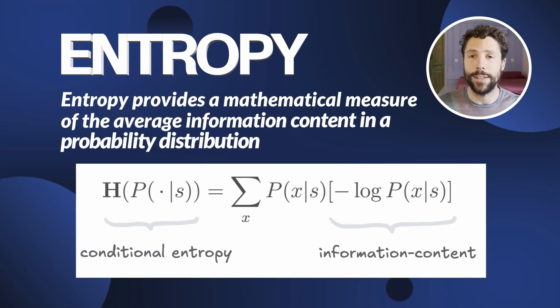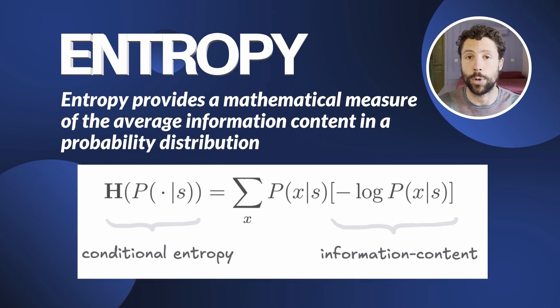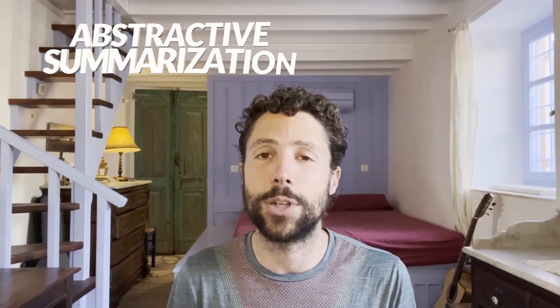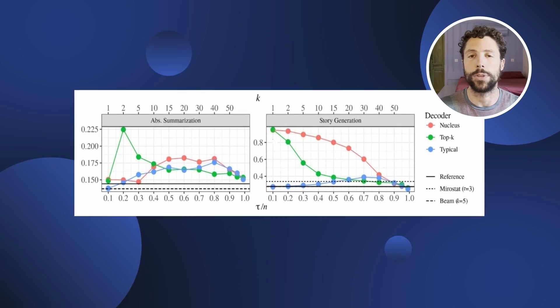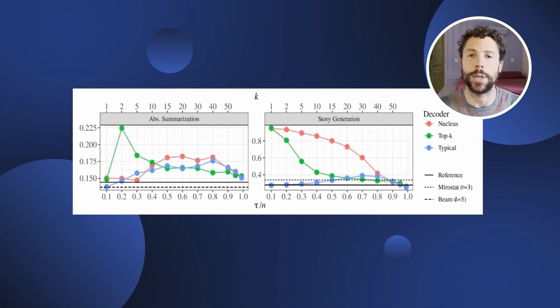In information theory, entropy provides a mathematical measure of the average information content in a probability distribution. The idea of typical sampling is to target text with average entropy during decoding. The researchers tested this approach on abstractive summarization and story generation. Compared to TOP-K and TOP-P sampling, typical sampling improves performance while reducing repetitions — the charts from the paper show repetition values for typical sampling staying relatively low across different hyperparameter regimes. Although the current implementation focuses on token-level selection, it would be interesting to apply the same principles at the sentence level or overall text planning. For developers building LLM-based applications where creative text quality matters, it is definitely a technique worth experimenting with.